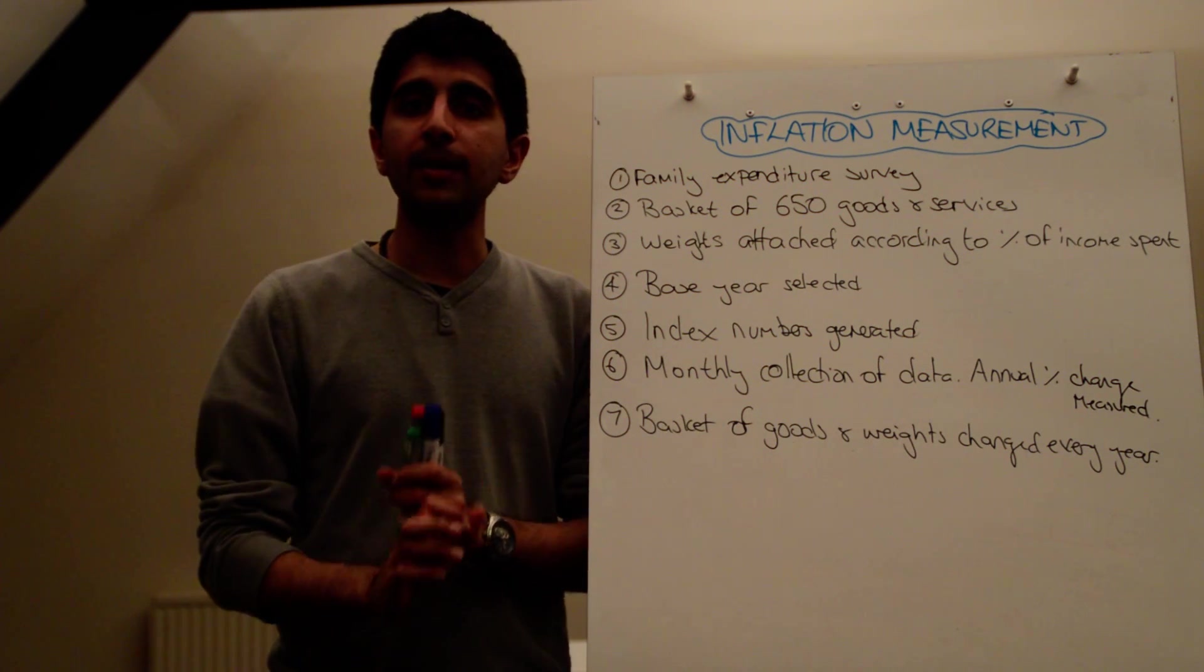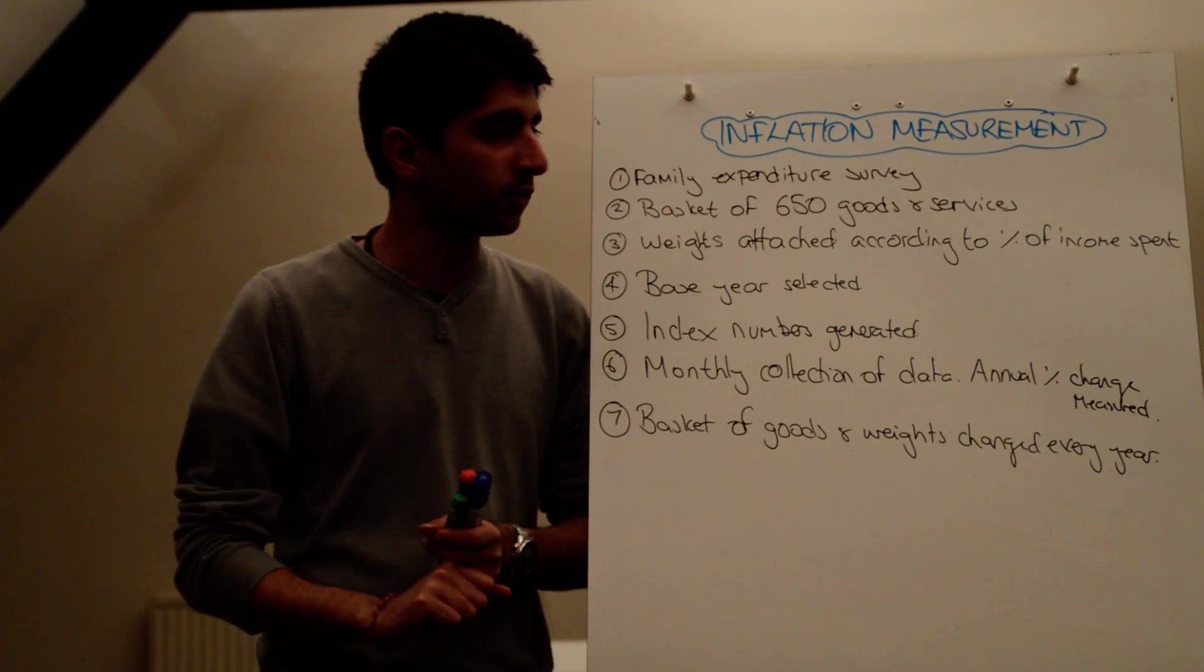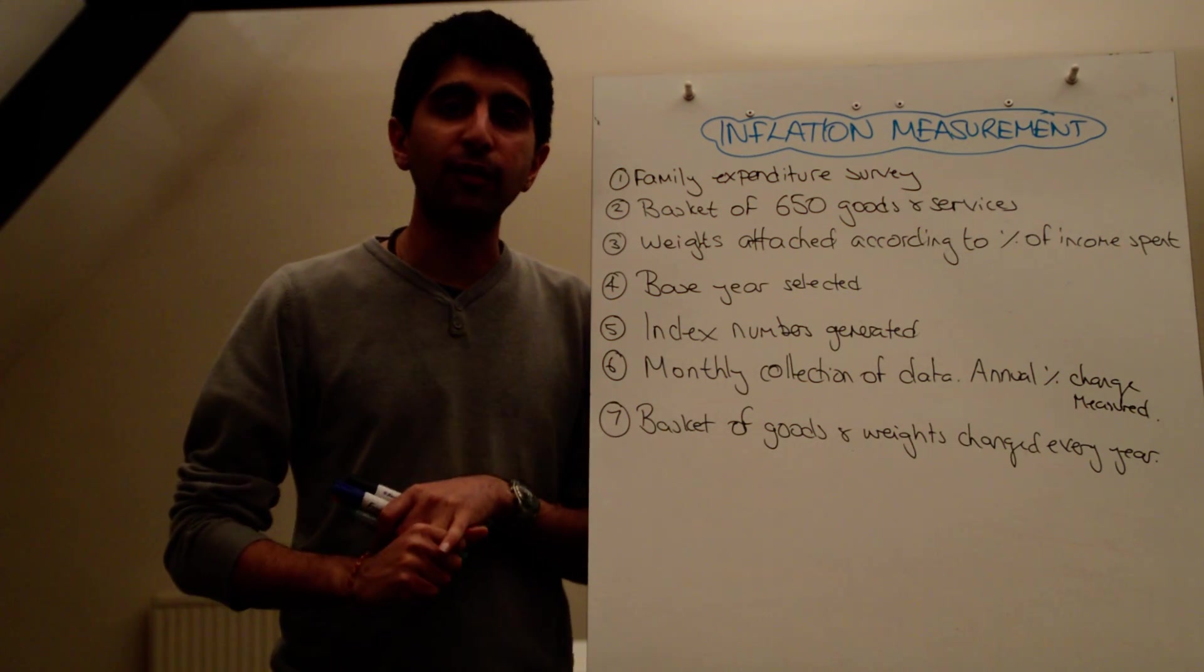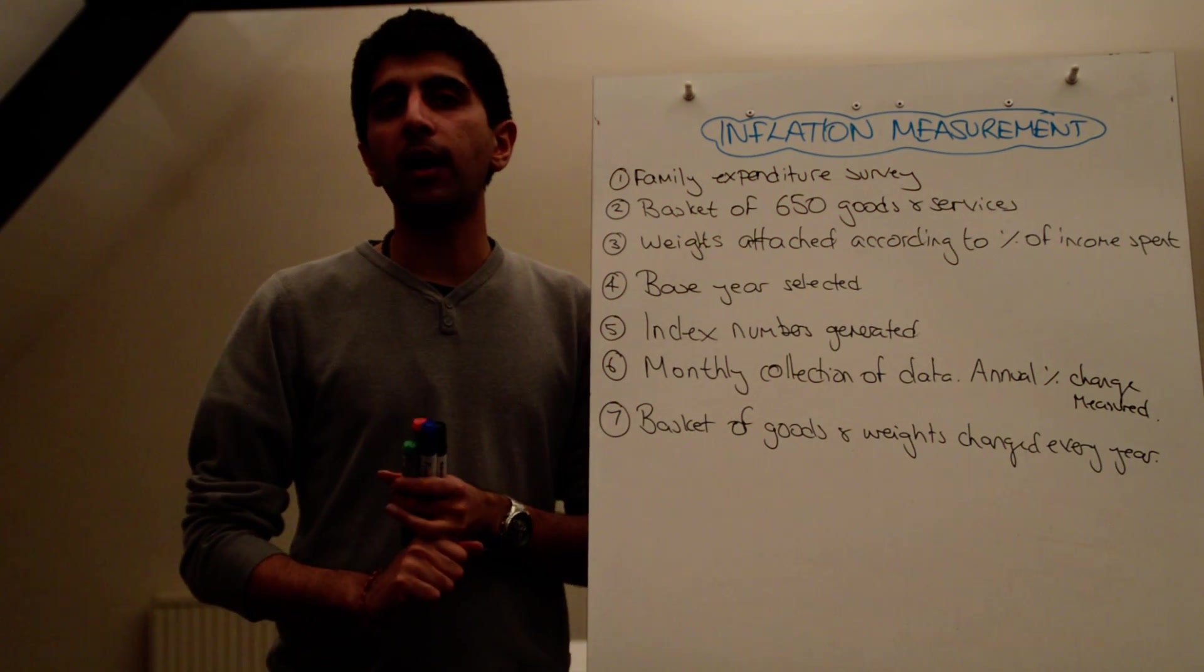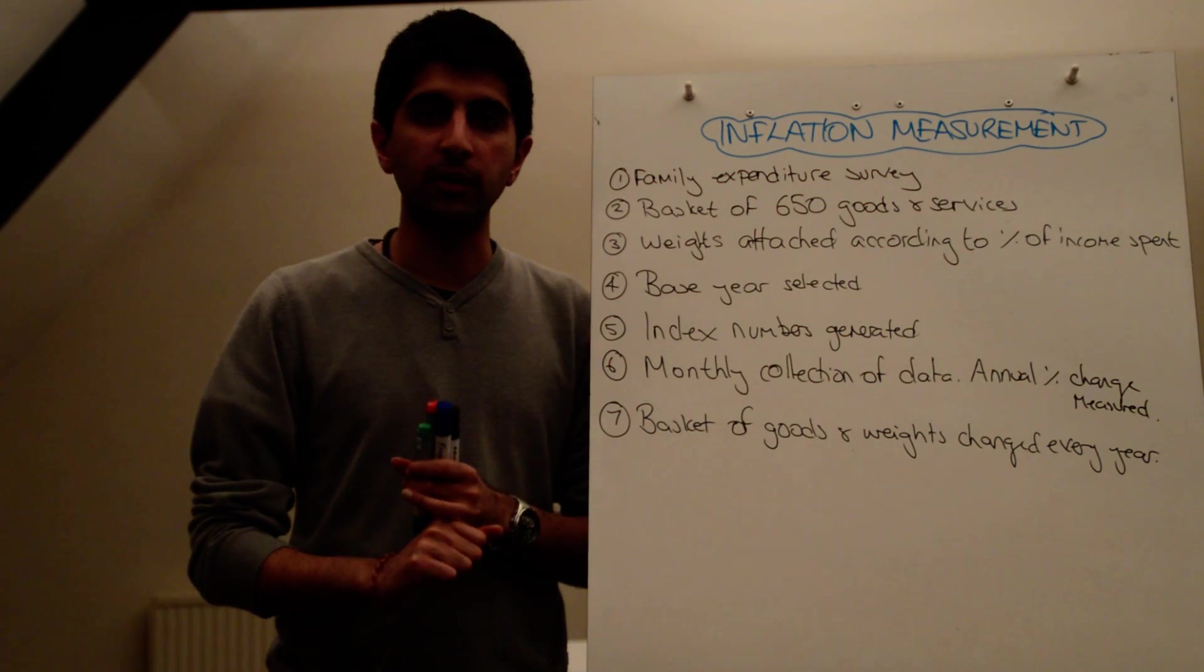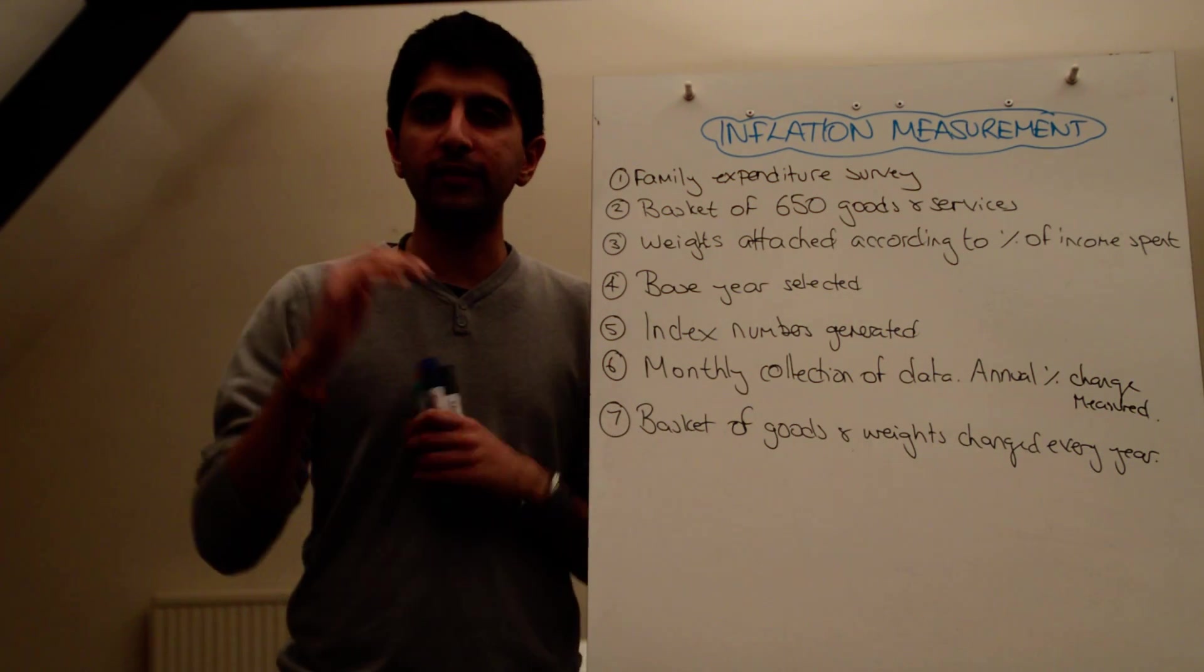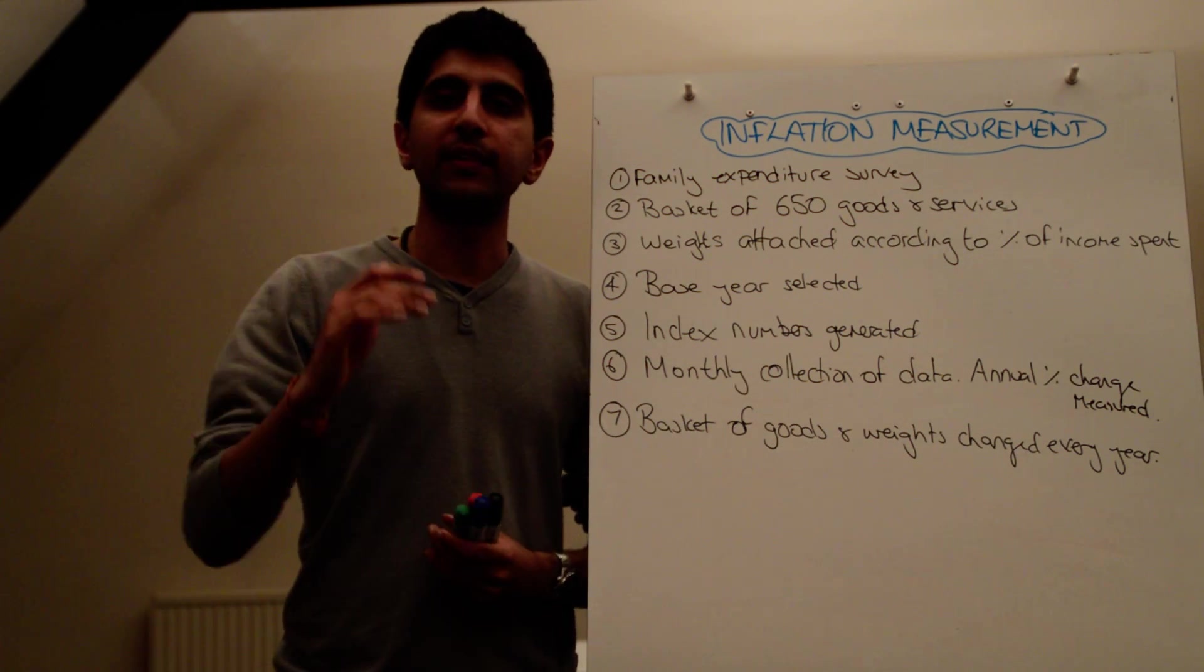Similarly, the RPI and the CPI are calculated using different means. The RPI is calculated using an arithmetic mean, whereas the CPI is calculated using a geometric mean, which means the RPI will always tend to give a higher rate of inflation than the CPI will.